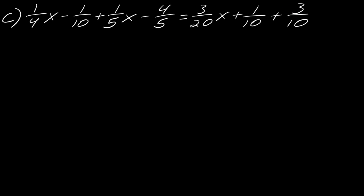Moving on to the next one — you can pause and read it over: (1/4)x minus 1/10 plus (1/5)x minus 4/5 equals (3/20)x plus 1/10 plus 3/10. The LCD here is 20. If you want to go through an example like this step-by-step I highly recommend the lesson video, where I walk through that process.